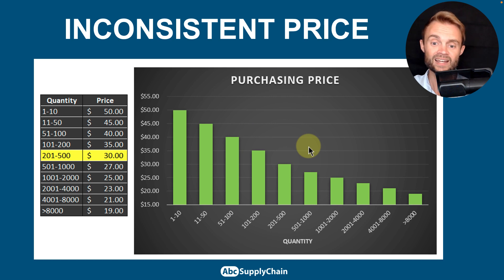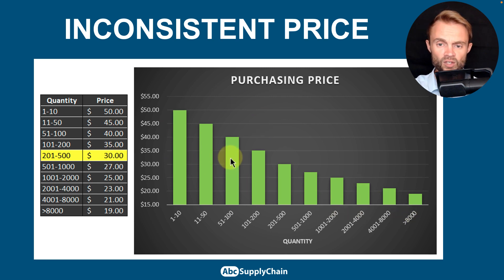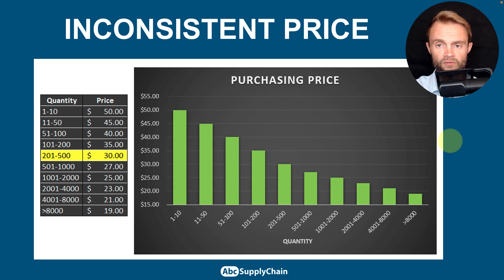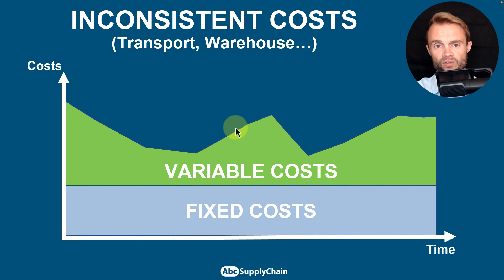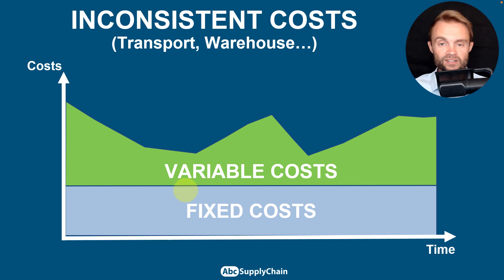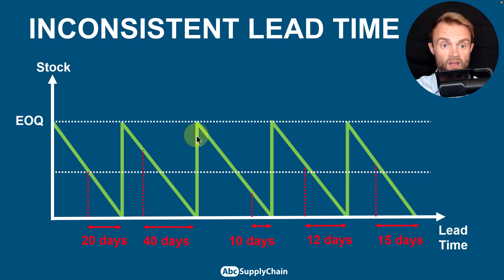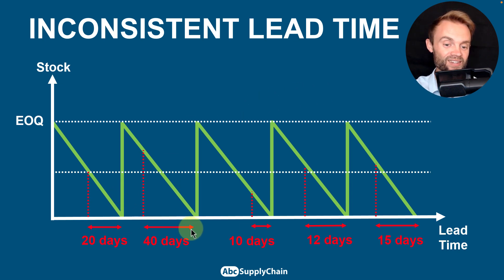The second limitation is inconsistent pricing — the more you buy, the cheaper the unit cost. You can include volume thresholds in the formula, but it becomes much more complex; using the average price is a practical approach. Third, costs like transport and warehouse storage include fixed and variable components, so using average costs is again a good approximation. Fourth, lead times are inconsistent — I'd use average lead time to keep the formula relevant.